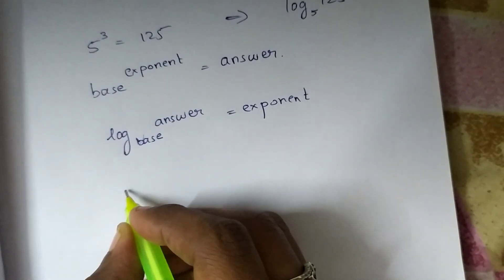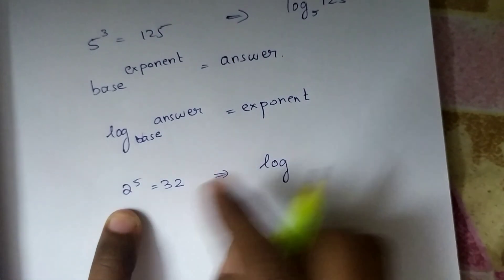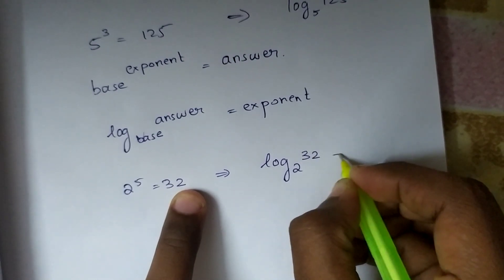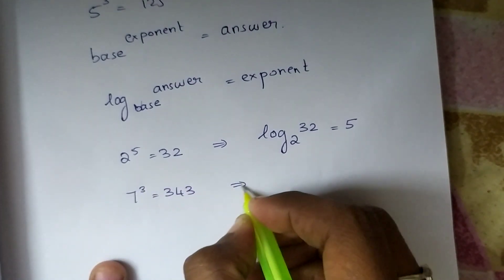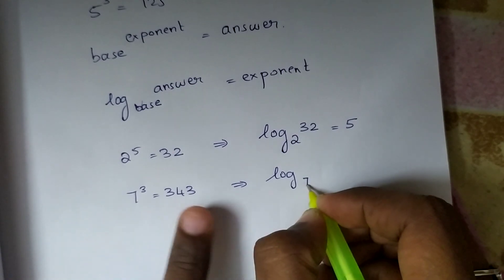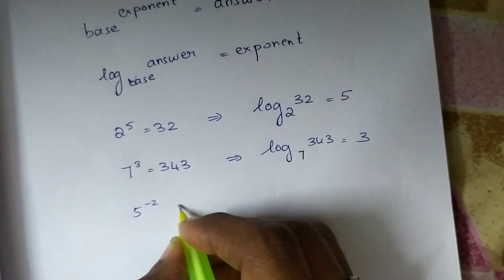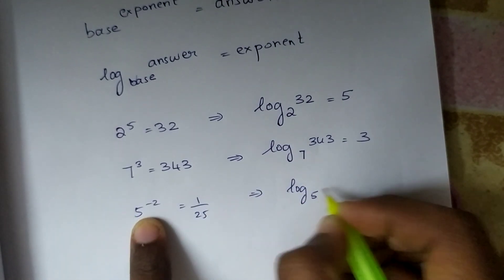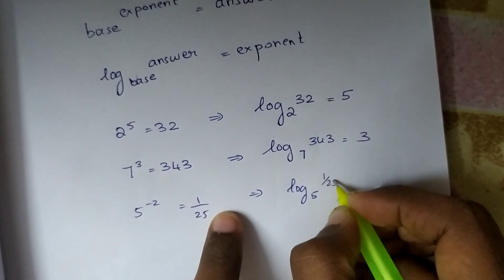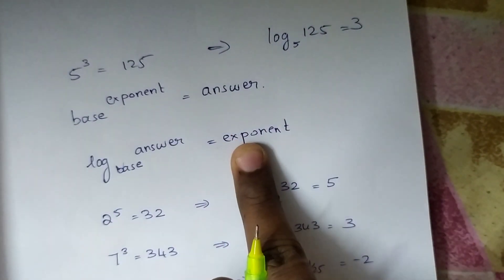Let us see some examples. If given 2 power 5 is equal to 32, write base here, answer here, and exponent here: log 32 base 2 equals 5. Then 7 power 3 is equal to 343: log 343 base 7 equals 3. Third example: 5 power minus 2 is equal to 1/25. Base stays the same, so log (1/25) base 5 is equal to minus 2. Always remember this.